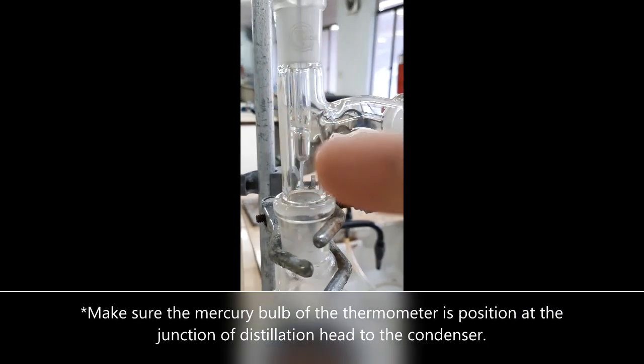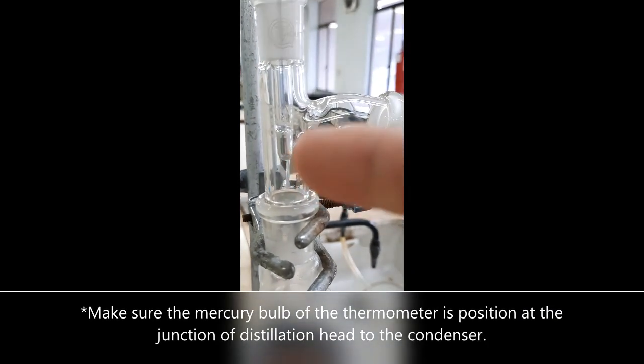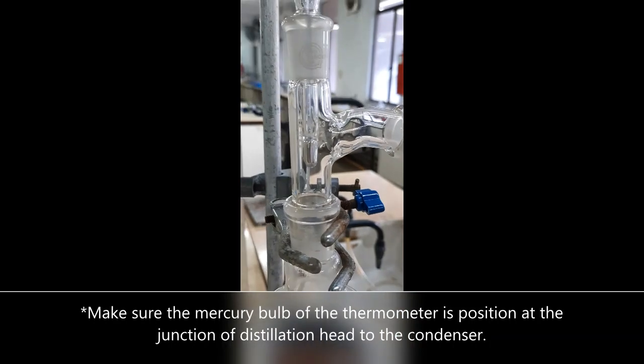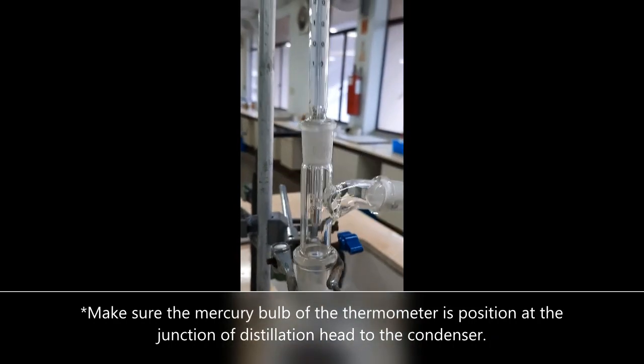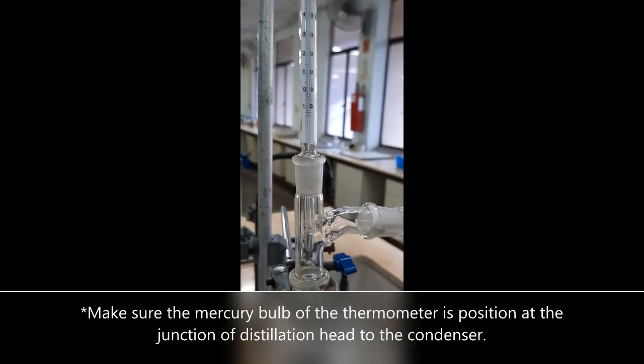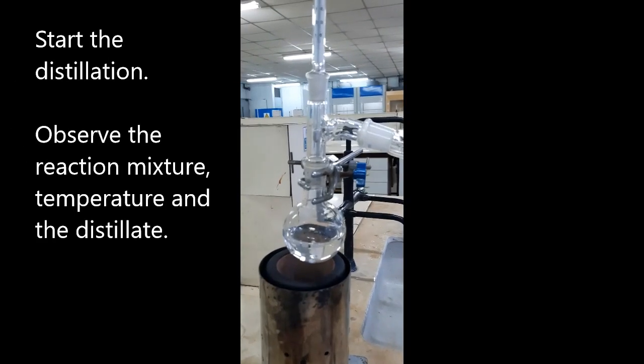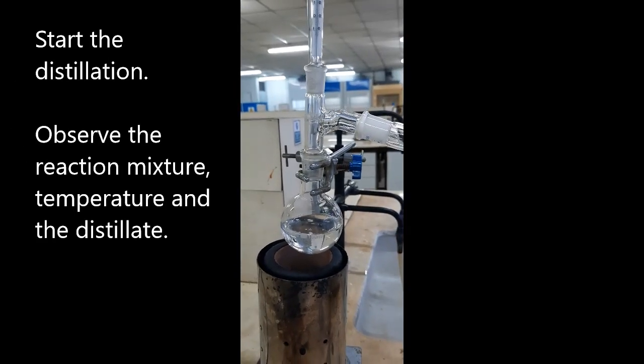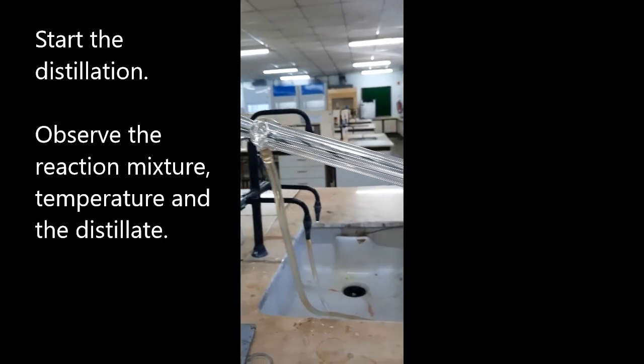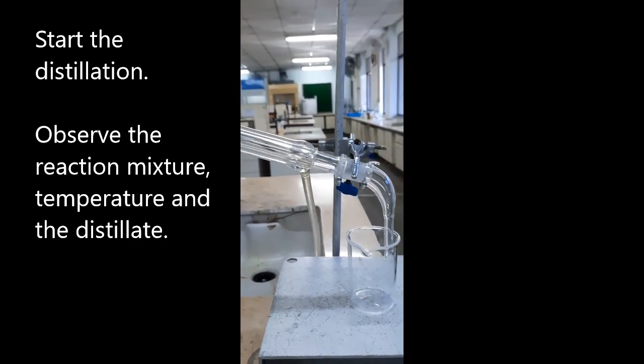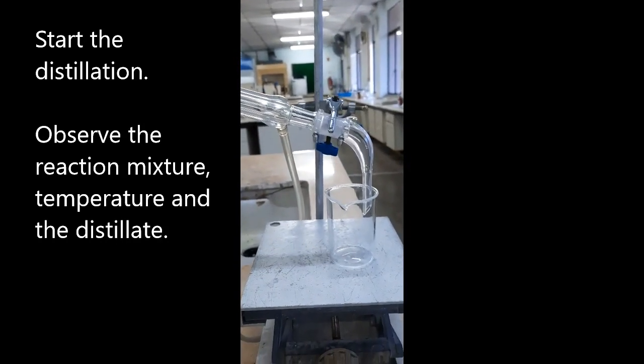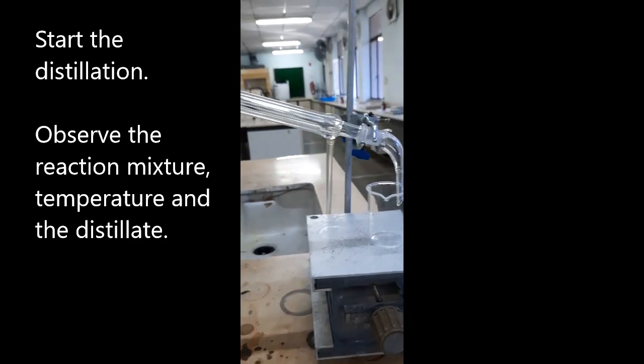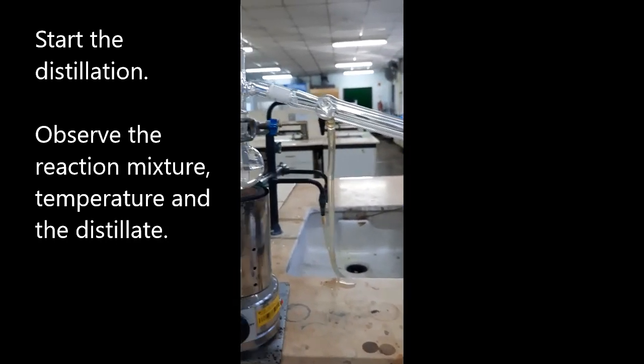Ensure the thermometer's mercury bar is positioned at the junction where the adapter meets the condenser. Switch on the thermal heater to begin the distillation. Observe the reaction mixture temperature and the distillate which exits the condenser.